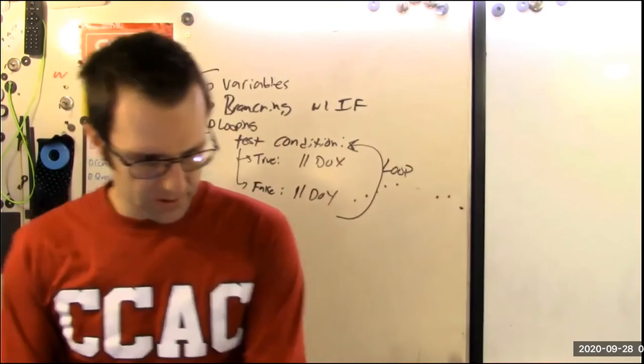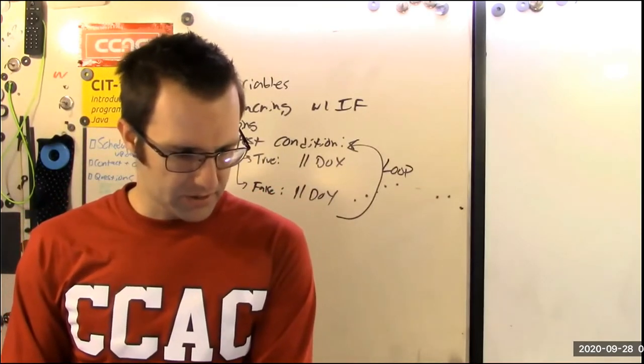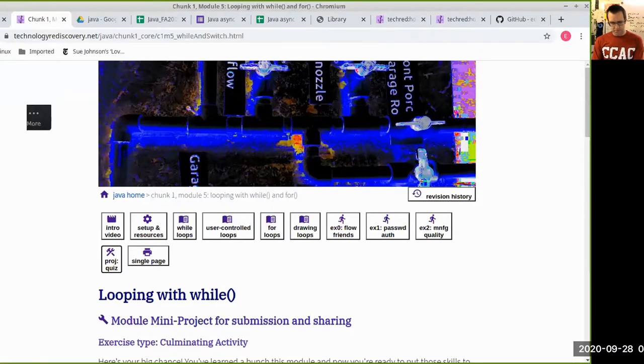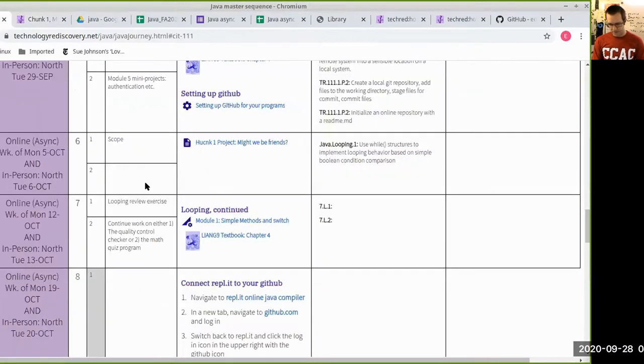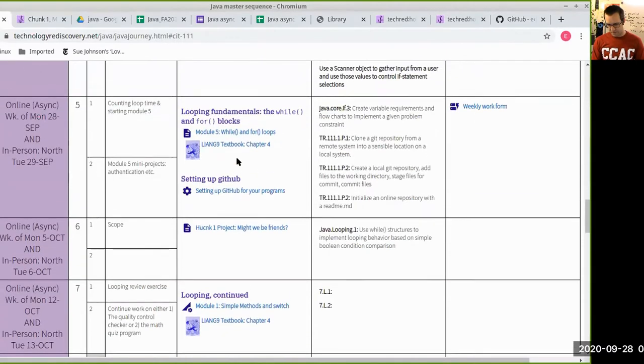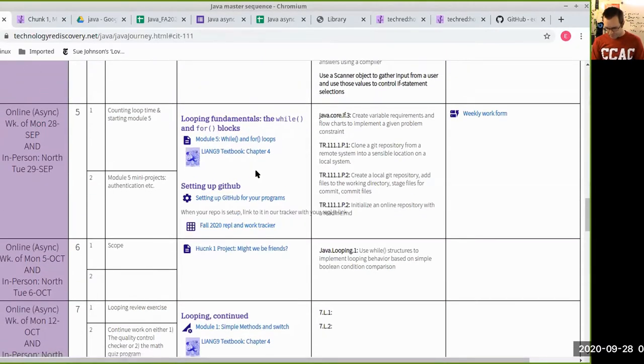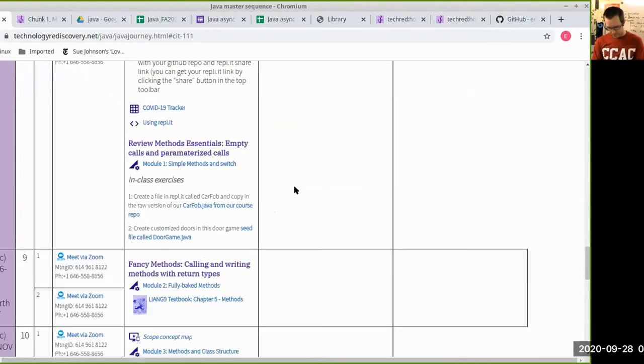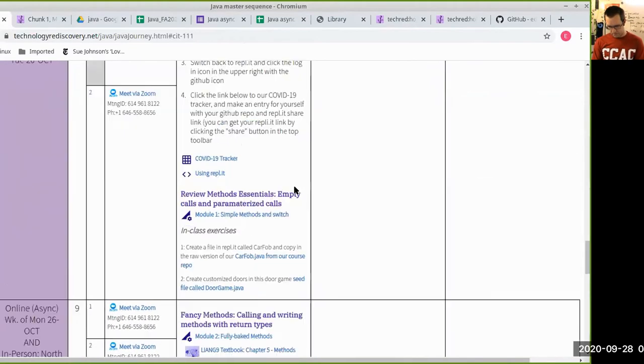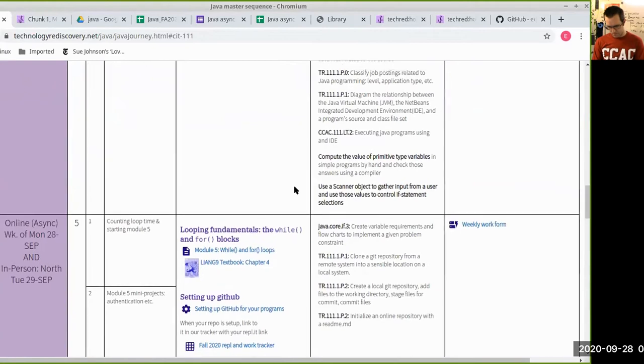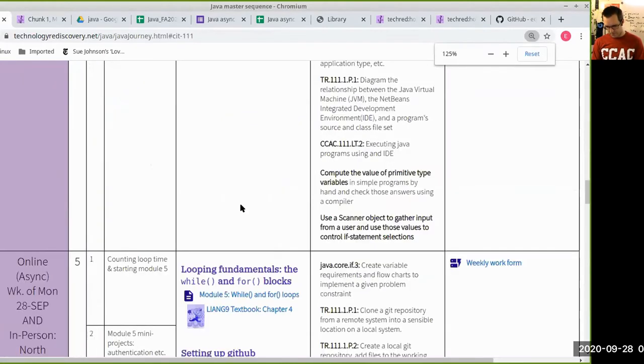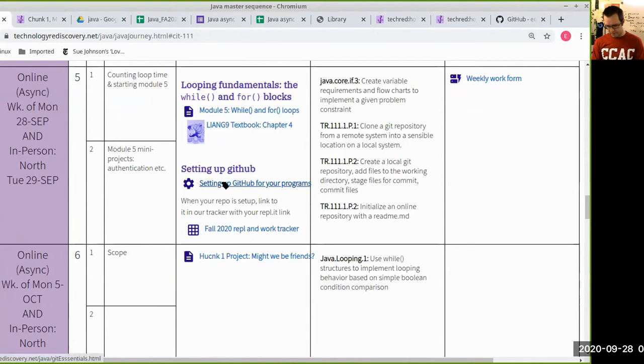So that's it for the module content. And then building on the questions that I was asked, we have one other to do list in our master sequence, and that is setting up GitHub for your programs. So here we are in week five. So the next step is to venture into Git.